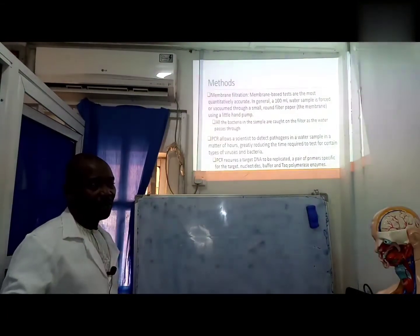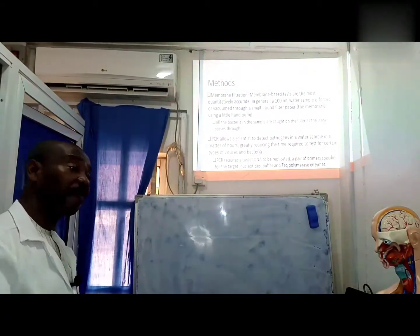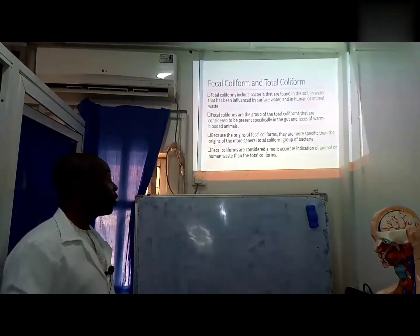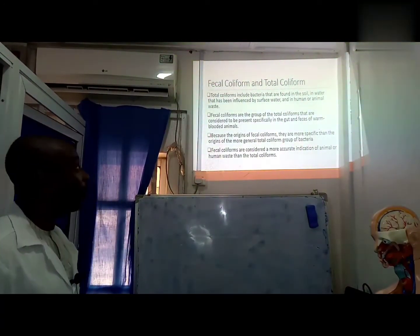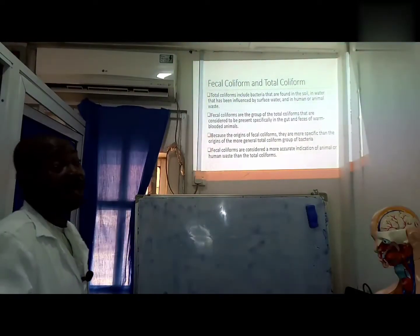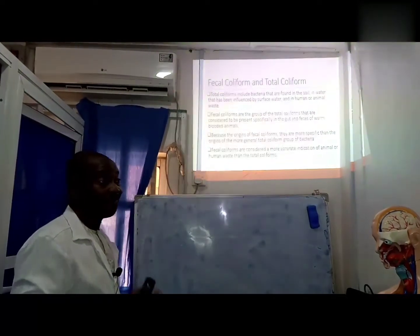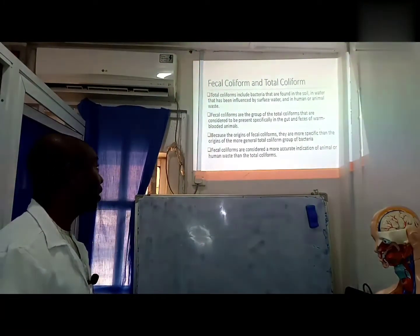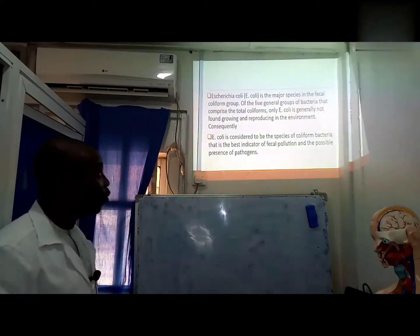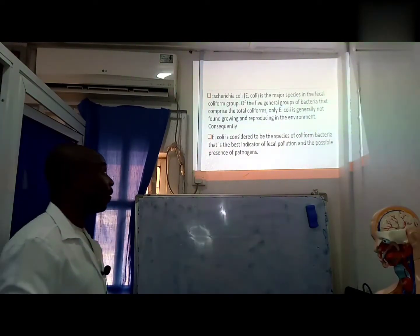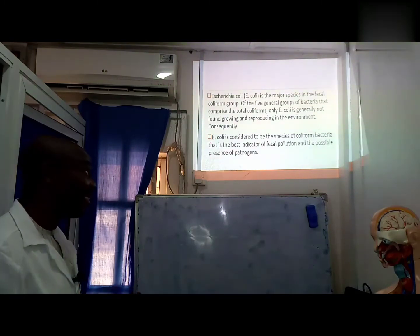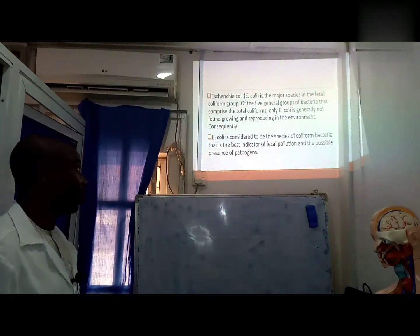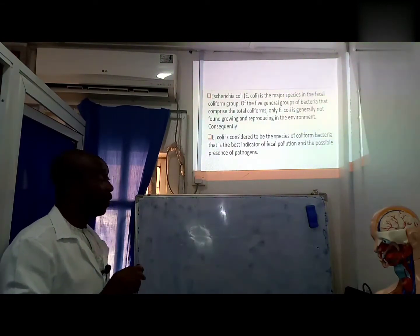We use PCR to isolate, characterize, and quantify the organisms that we have in the water. Fecal coliform and total coliform have been previously used with PCR for analysis to have something of very high quality. E. coli is considered to be the species of coliform bacteria that is the best indicator for fecal pollution. Of course, there are other sources of E. coli, but the fecal E. coli appears to be of greater consideration.